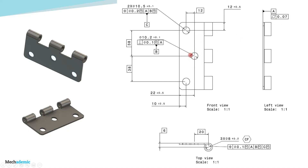The center hole is datum B. There are three fastening holes on the bracket, but we make one hole smaller than the other two for better part location. During assembly, the fastener is inserted through the center hole first, then through the other two holes. This center hole has a basic size of 10.2 ± 0.1 and must be controlled within a perpendicularity tolerance zone of 0.1 with respect to datum A at maximum material condition. This feature of size — the center locating hole — is datum B.